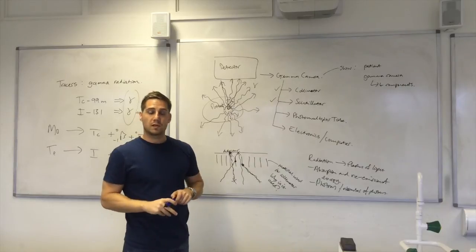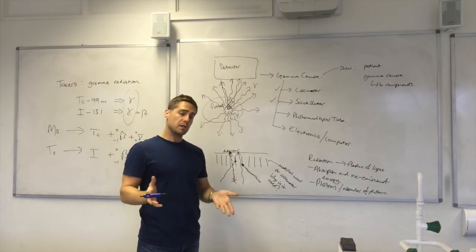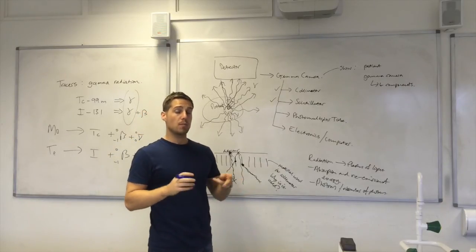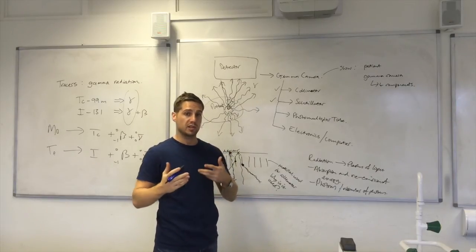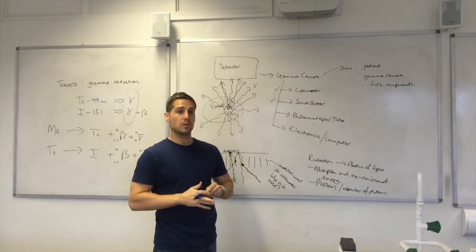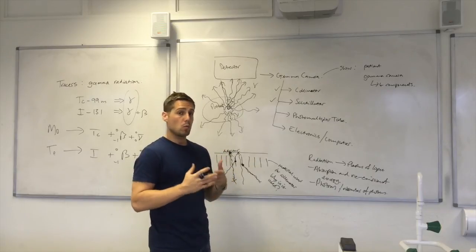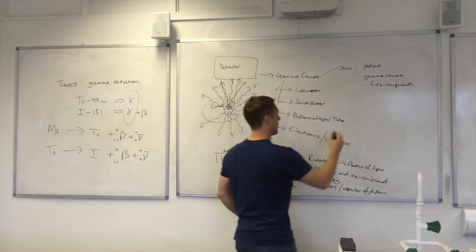Next, we're onto the photomultiplier tube. Now the photomultiplier tube is actually a combination of two components. So I want you to refer to those two components and generally explain, or briefly explain, what each one does. So within here, you actually have a photo cathode and dynodes.